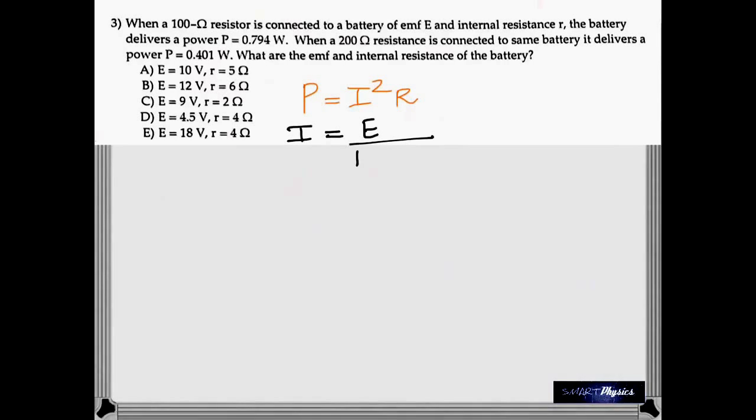Here you have a situation of a 100 ohm resistor connected to a battery. It delivers a certain power, 0.794. But, when the 100 ohm is replaced by a 200 ohm, the same battery delivers a power of 0.401. So, you have got to calculate the EMF and the internal resistance of the battery.